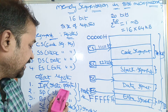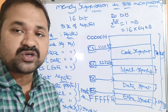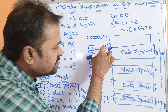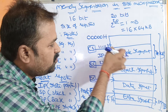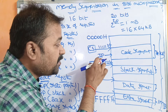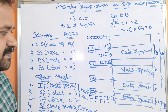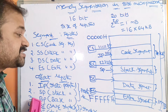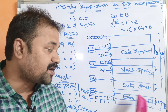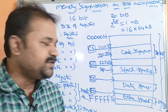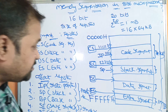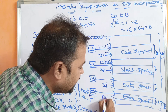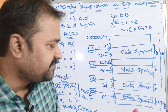The Instruction Pointer points to an offset within the Code Segment — a particular location such as 31111H, 31112H, or 31113H. The Stack Pointer points to an offset within the Stack Segment. The Base Pointer points to an offset within the Stack Segment, Data Segment, or Extra Segment. The Source Index (SI) points to an offset within the Data Segment, and the Destination Index (DI) points to an offset within the Extra Segment.